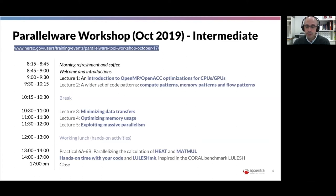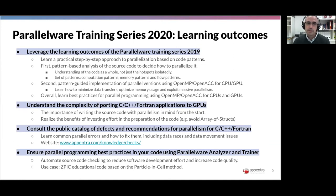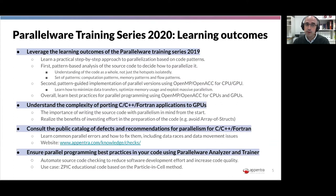In this new course, we are leveraging the training outcomes of the 2019 series. You will learn the patterns, the differences between them, and how to use pattern-guided implementation of parallel code with OpenMP and OpenACC for CPU and GPU — all within a practical step-by-step approach to go from sequential to parallel code. We try to avoid approaches that cannot be repeated and systematized, because this is essential for productivity and reducing development costs. Overall, you are learning best practices for parallel programming with OpenMP and OpenACC.